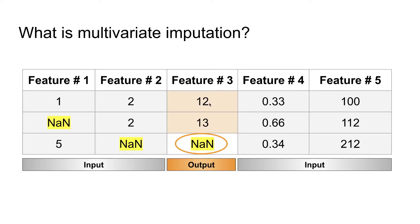One important thing to mention: while training, it needs a target, and the target uses only the non-missing value rows. So only the rows that have data — for example rows 12 and 13 — would be used. Once the regressor is trained, it can be used to predict the missing values in that particular output feature, in this case feature three.